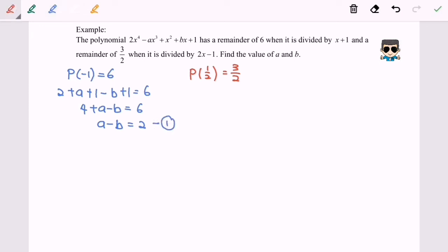So now we are going to try on the second equation. Substitute 1 over 2 into the function, so we will have x to the power of 4. By using the calculator, we will have our answer: 11 over 8 minus a over 8 plus b over 2 for the left hand side, and equals to 3 over 2.